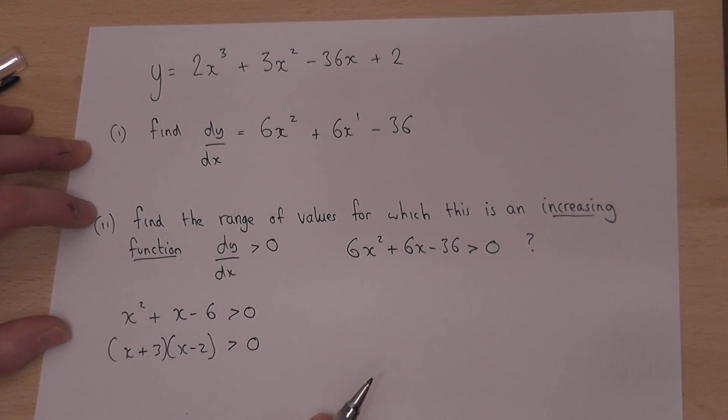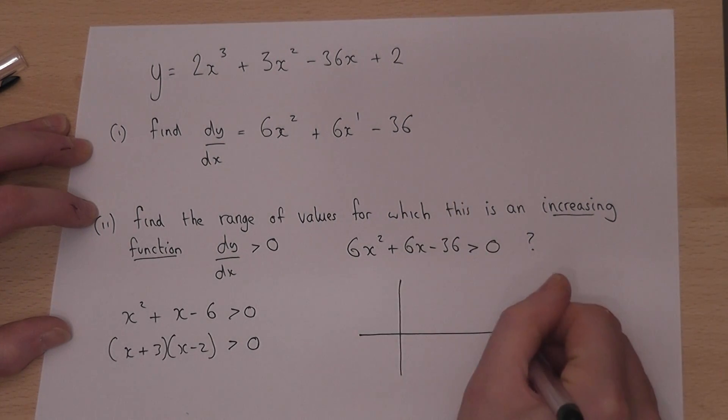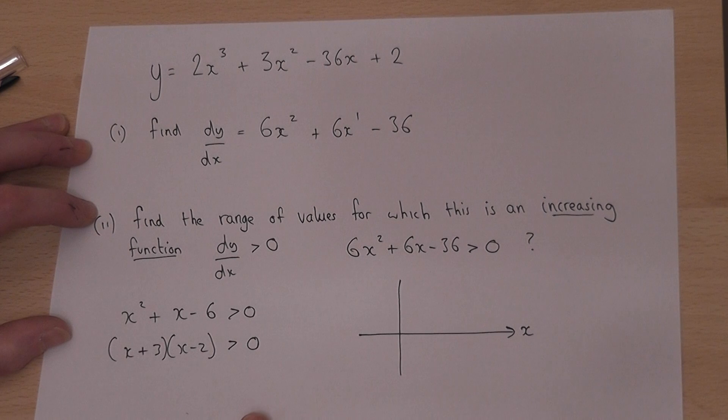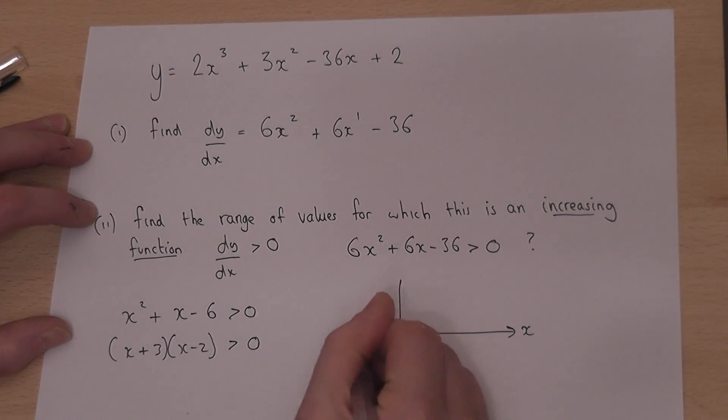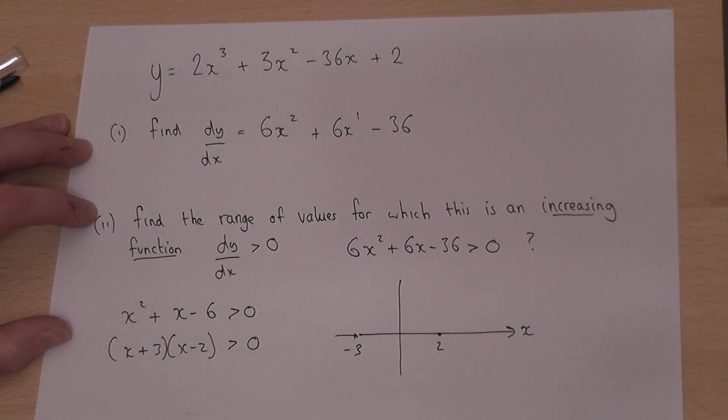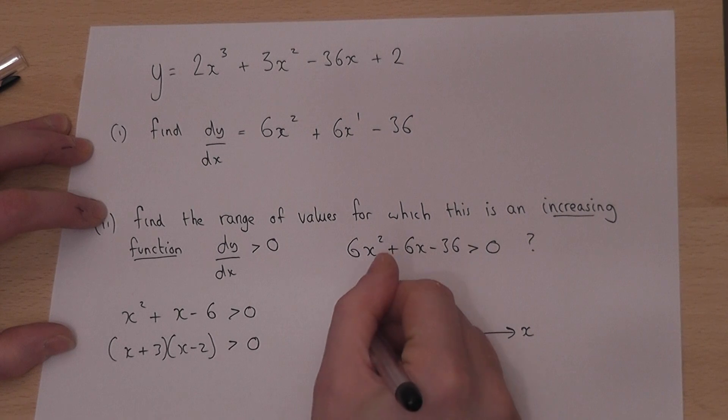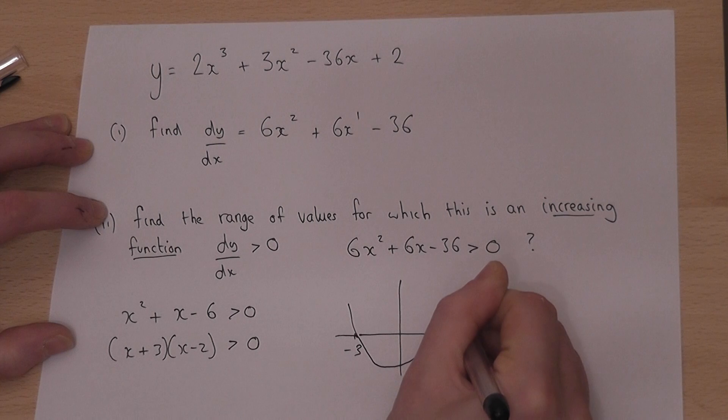Now, if I were to sketch this function here, we have roots at minus 3 and also at plus 2. So this function, which is an x squared quadratic, passes through minus 3 and plus 2.